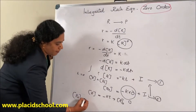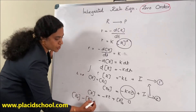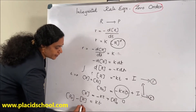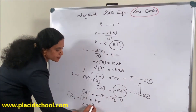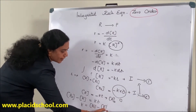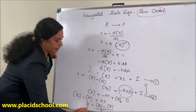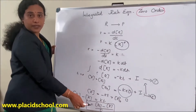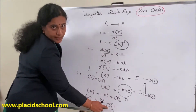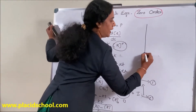Rearranging: R₀ minus R equals Kt, since R₀ and R are concentration terms. Therefore, the rate constant K is equal to the molar concentration of R₀ minus the molar concentration of R, divided by t.